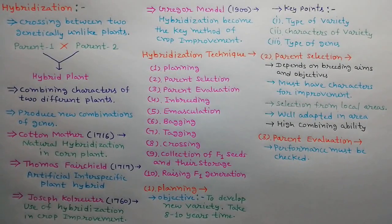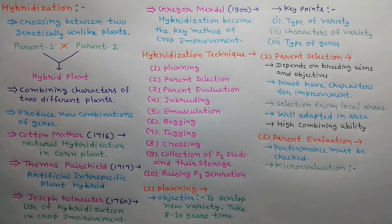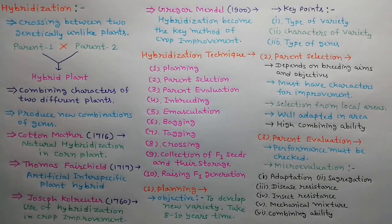The third step is parent evaluation. Performance of parent plants must be checked by growing them in related area for one to two years. Following features of parent plants are evaluated: adaptation, segregation, disease resistance, insect resistance, mechanical mixture, and combining ability.